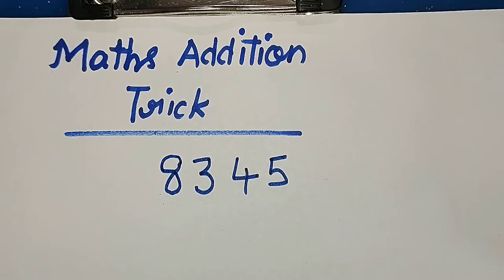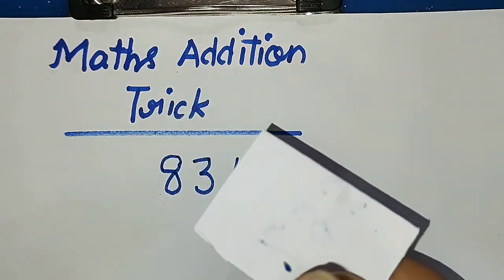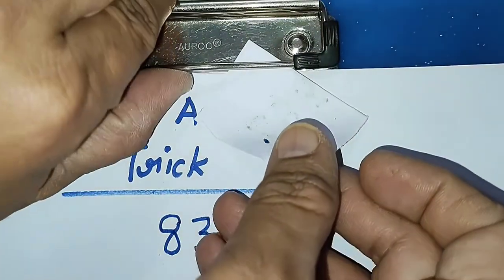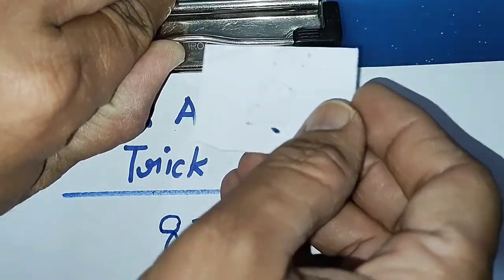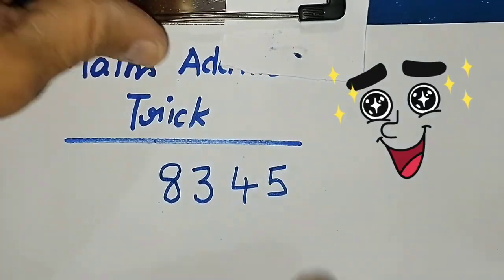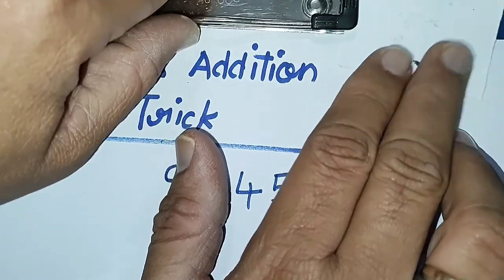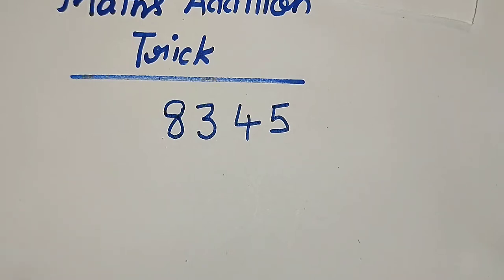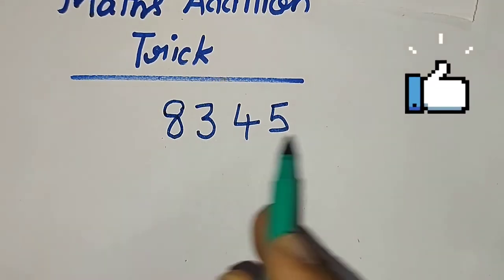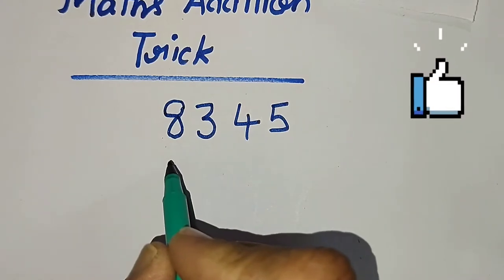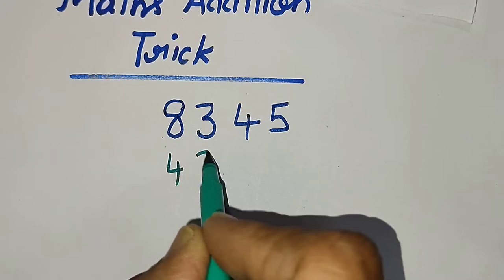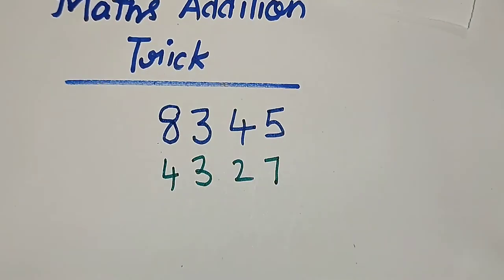Before that, I will write a secret number on a paper, fold it, and place it here. I will reveal it at the climax. Now, ask your friend to write another 4-digit number under this. Suppose he has written the number 4327.